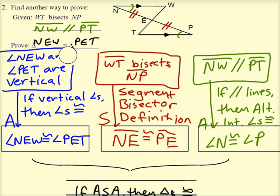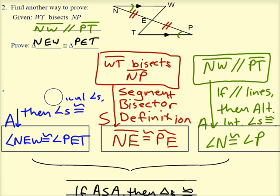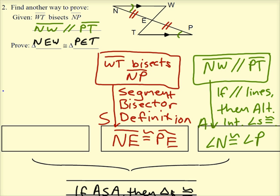And so all of this blue information we actually wouldn't use. Instead of the blue angles at N, E, W, and P, T, we can still use the fact that N, W, and P, T are parallel, right, these segments.